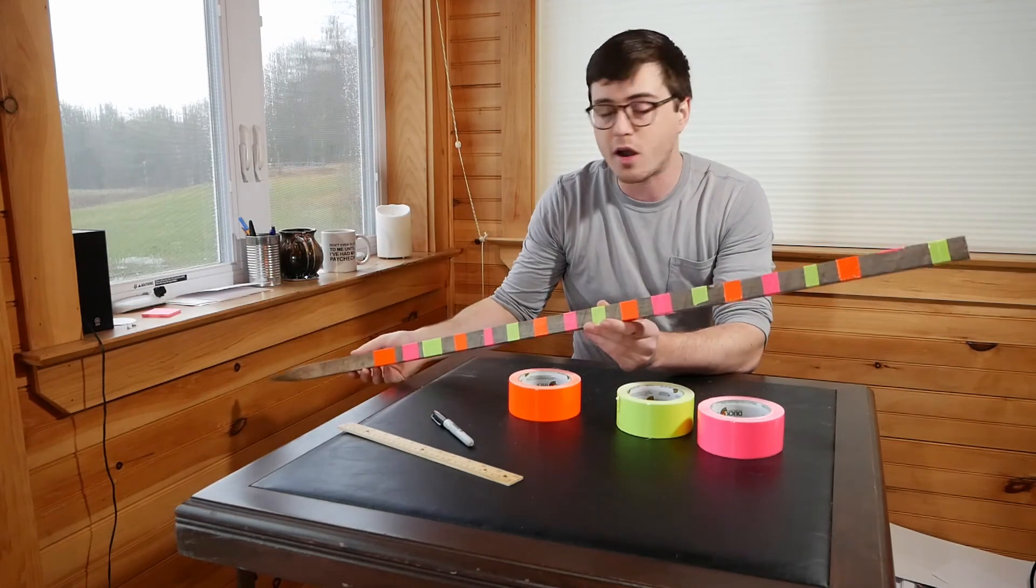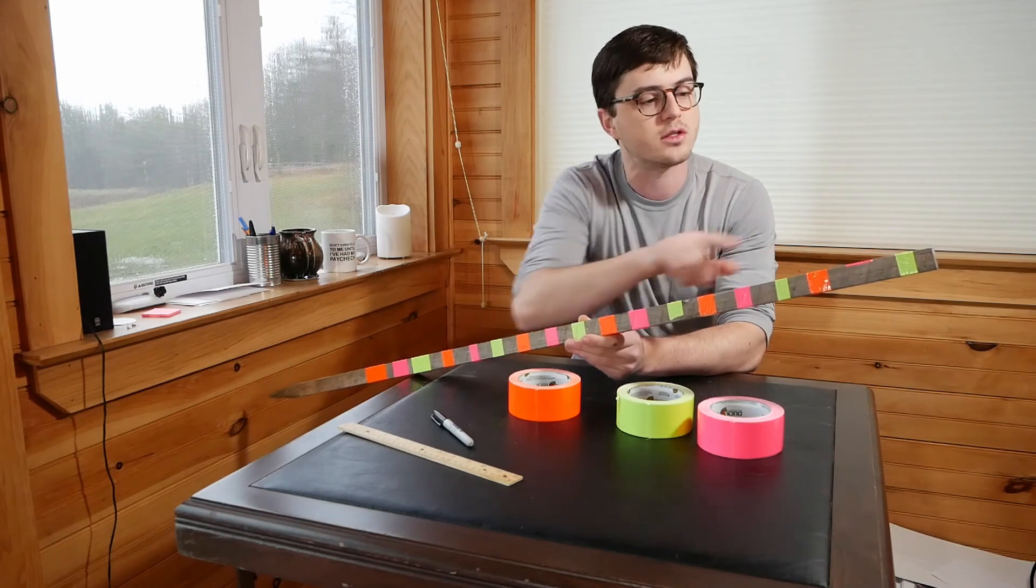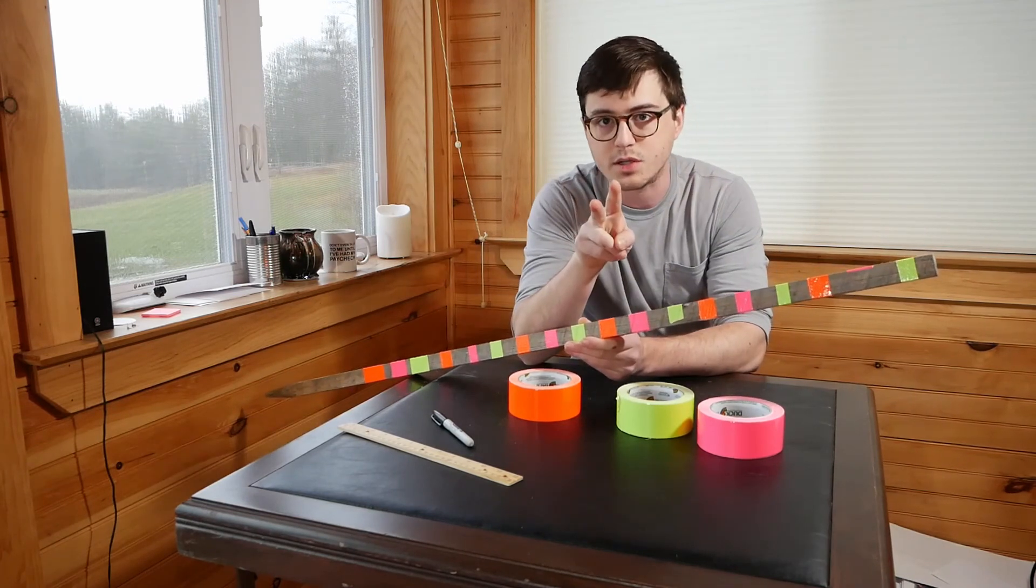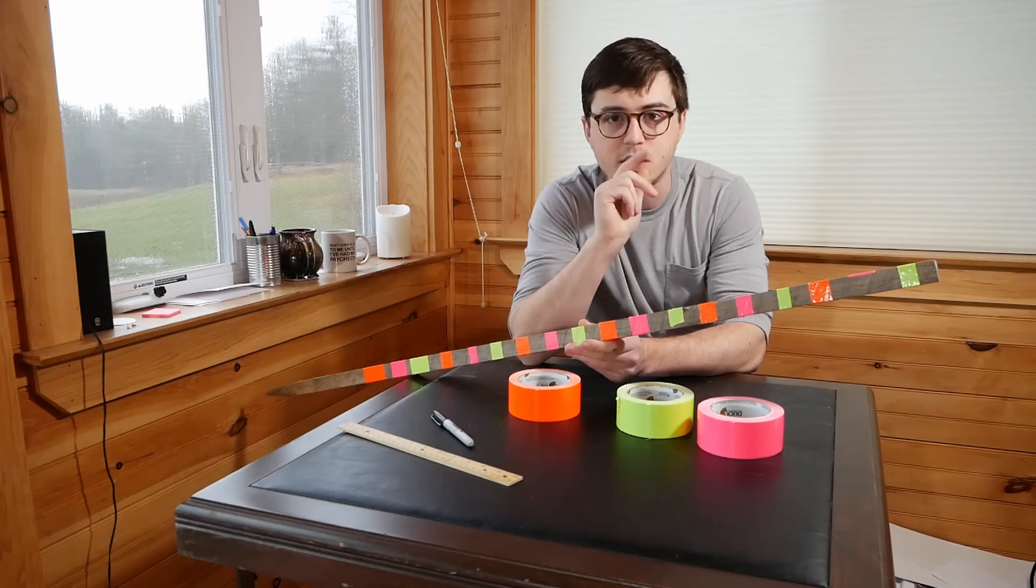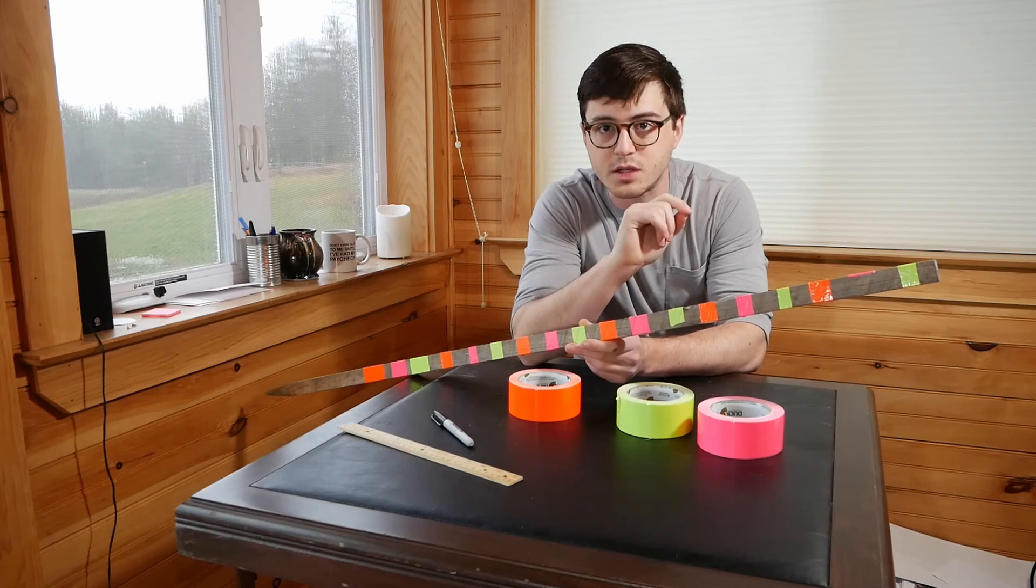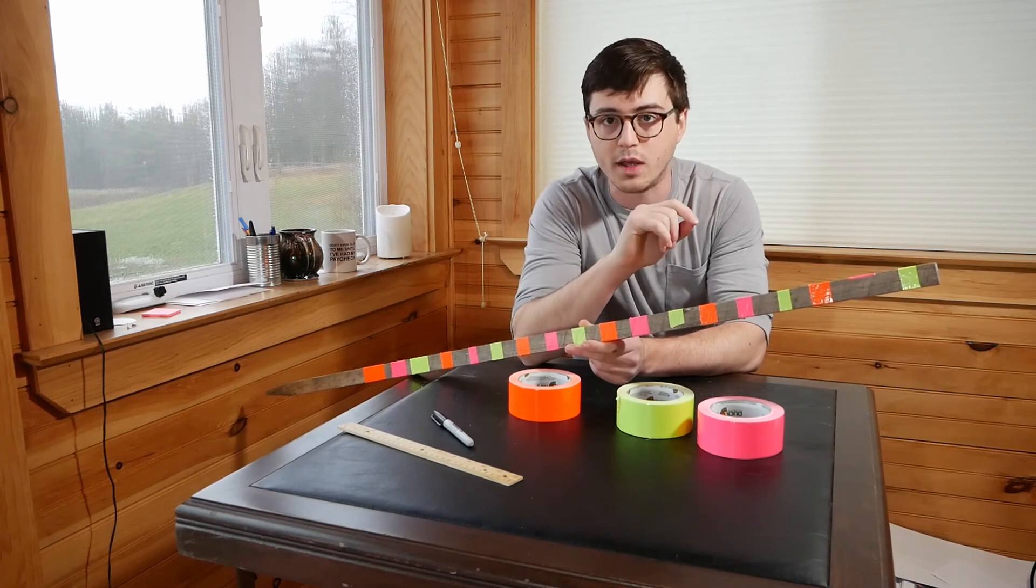So I've converted my garden stake into a snow gauge. It's three feet tall. I've got a different color every two inches so that I can tell just by looking out the window how much snow has fallen. The last thing to do is to place this out in the yard.